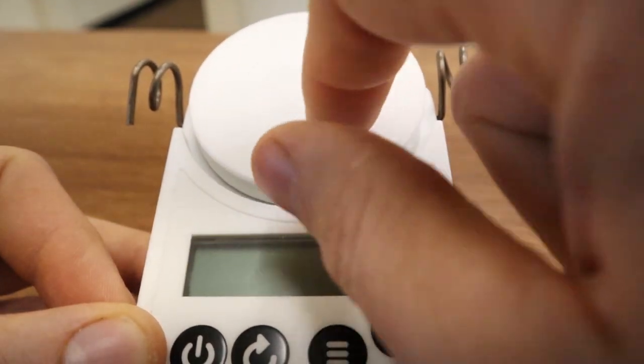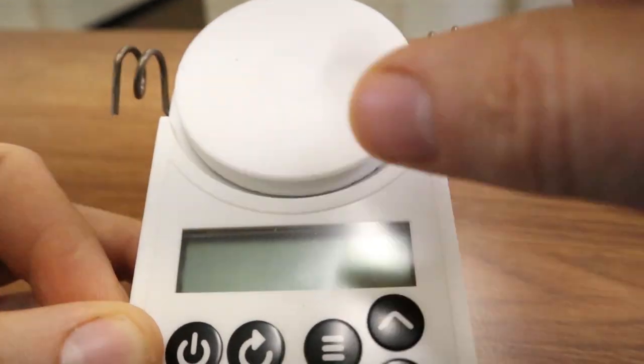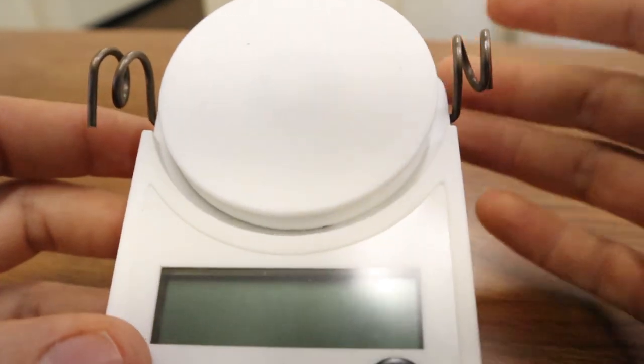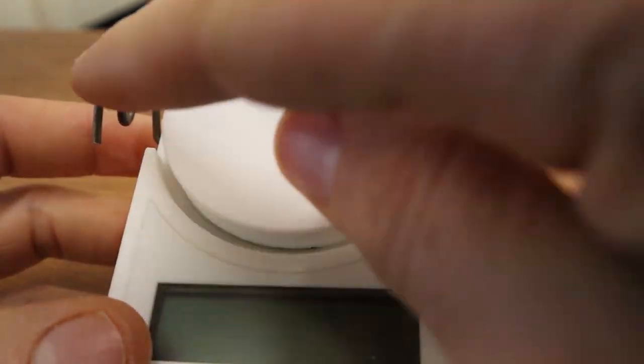The way that all the yarn counters I've looked at perform in the hobbyist market is yarn comes in and spins a wheel, then exits. This looks a lot different than most yarn counters out there, but it functions in a very similar way.